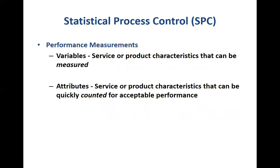If you think about the types of performance measures that organizations consider, you can categorize them broadly into two types. One are the variables — the ones that you can measure, which have quantitative numbers that you can capture. A variable would be, for example, the diameter of a screw. You have a specific diameter that the customer wants, and that's something which you can continuously measure within your outputs and ensure they are in line with what the customer wants.